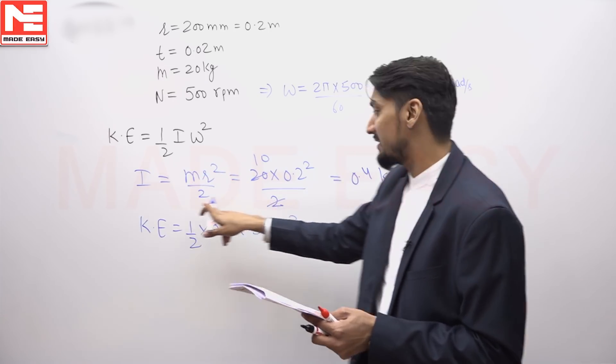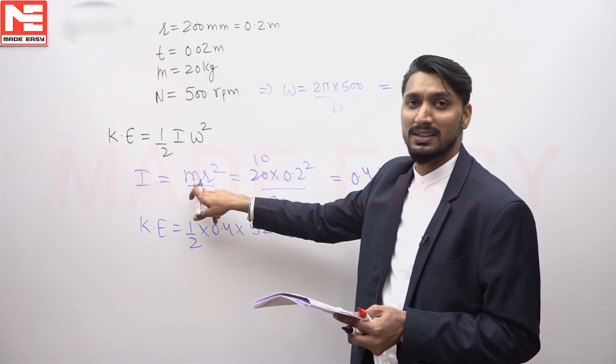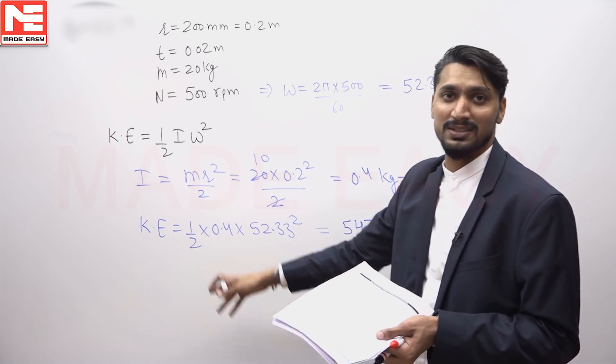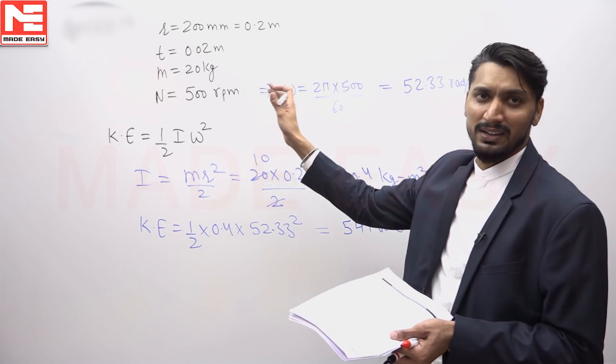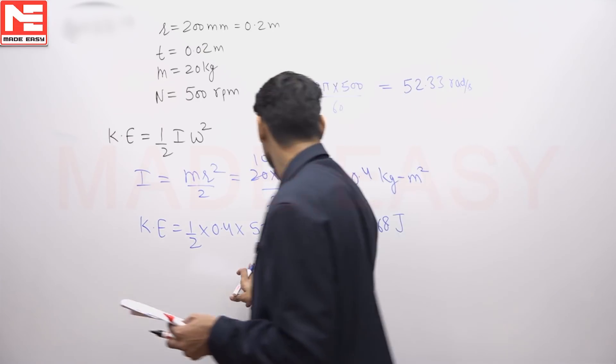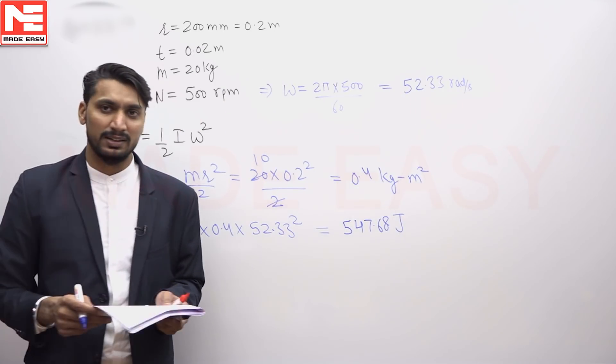If I consider the mass as that of a cylinder, it will come out the same. It's not going to make any difference. Your answer is 547.68 joules.